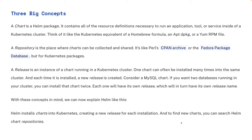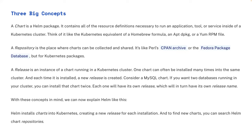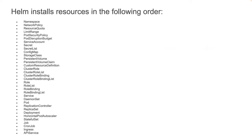In general, Helm installs charts into Kubernetes and creates a new release for each installation. You can also find charts using the helm search command to search repositories like Artifact Hub, which is one of the registries Helm supports, or any other OCI-compliant registry. Now, one important thing you don't have to memorize but should understand: your Helm chart may contain deployment files, service accounts, secrets, and config maps — but how does Helm know which one to install first?